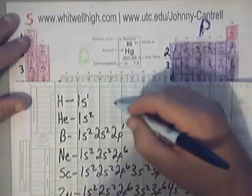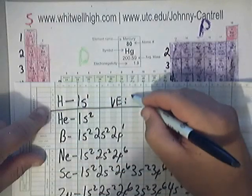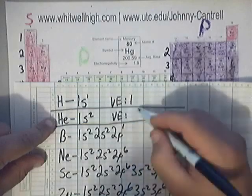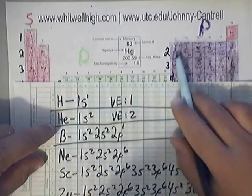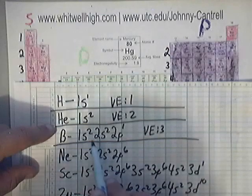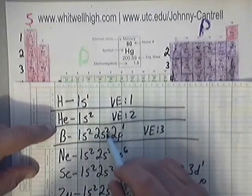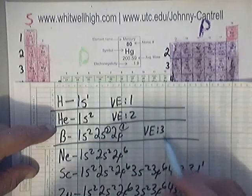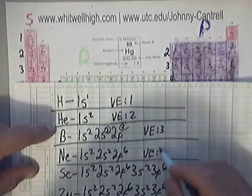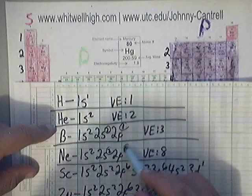As far as valence electron counts: hydrogen has one valence electron because it's in column one. Helium has two valence electrons. Boron is in column thirteen, so we know it has three. Looking at the electron configuration, the highest energy level is two — the 2s and 2p orbitals — and two plus one equals three. Neon is in column eighteen with eight valence electrons: the 2s² and 2p⁶ at energy level two add up to eight.